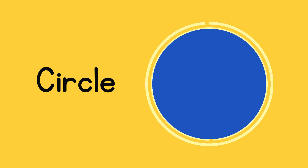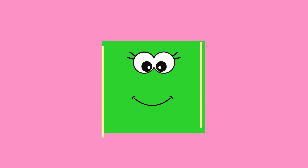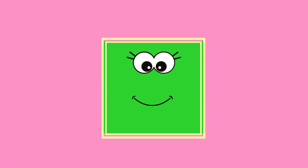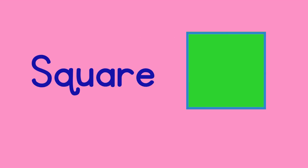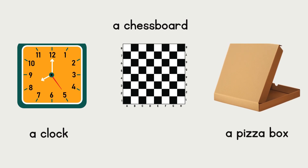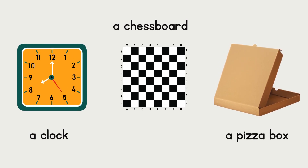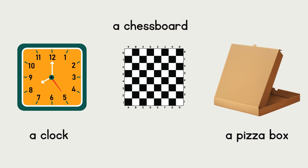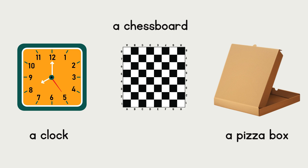Now you know that our circle is round and it goes round and round all around. Which shape is it next? It has four sides and four corners — it's a square! Let's look at some examples of squares from the world around us. A chessboard is a square shape, a pizza box is a square shape.